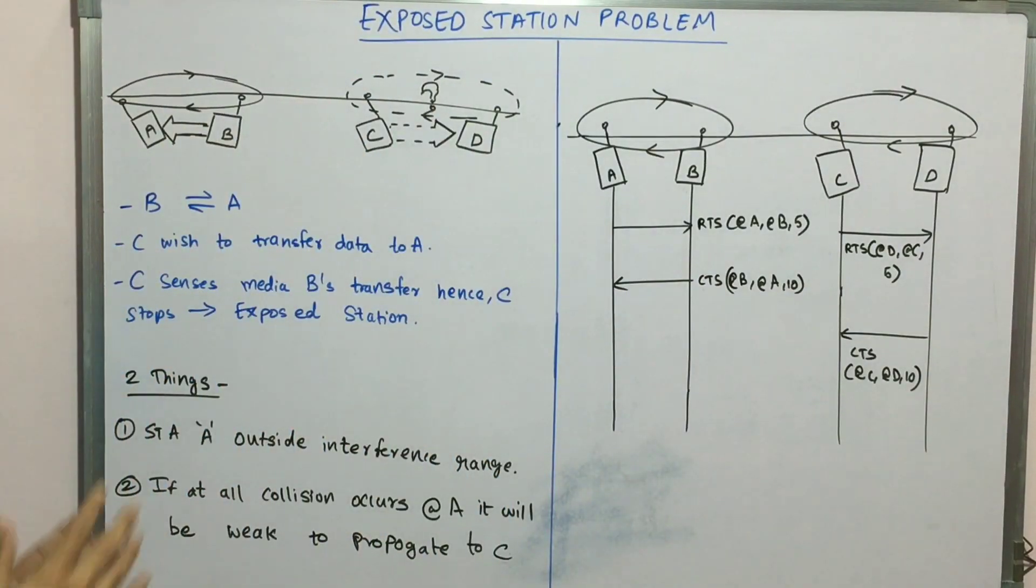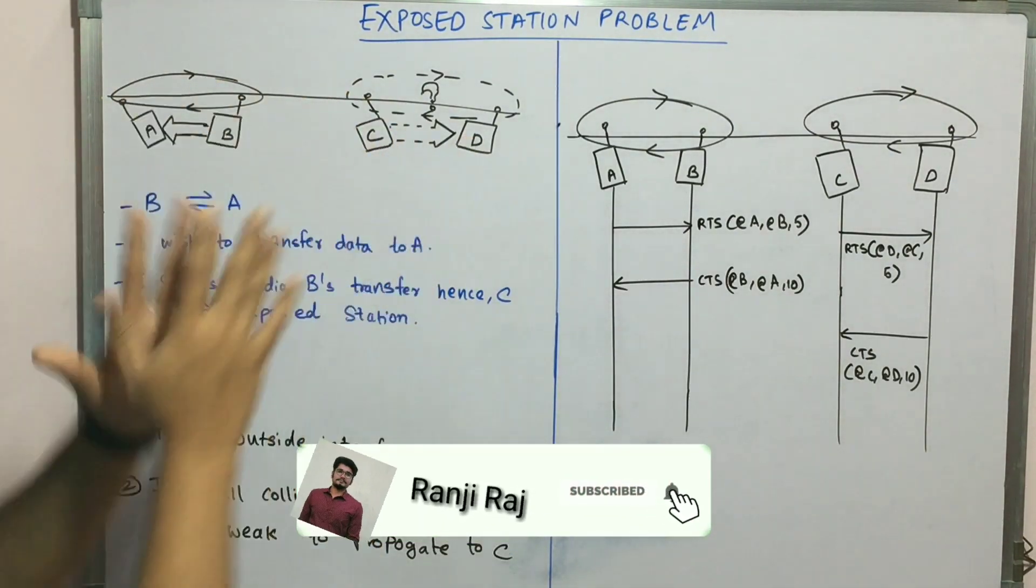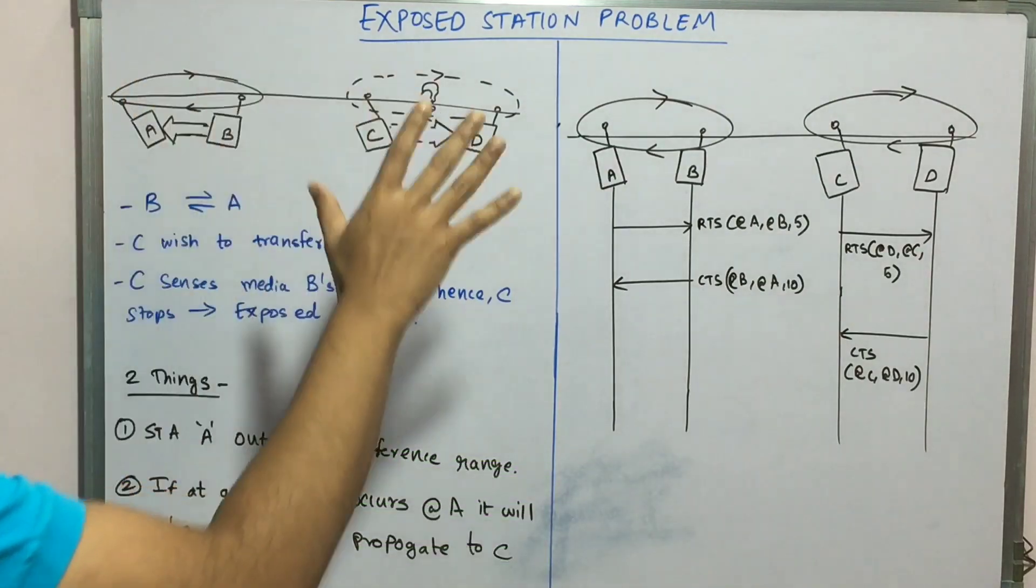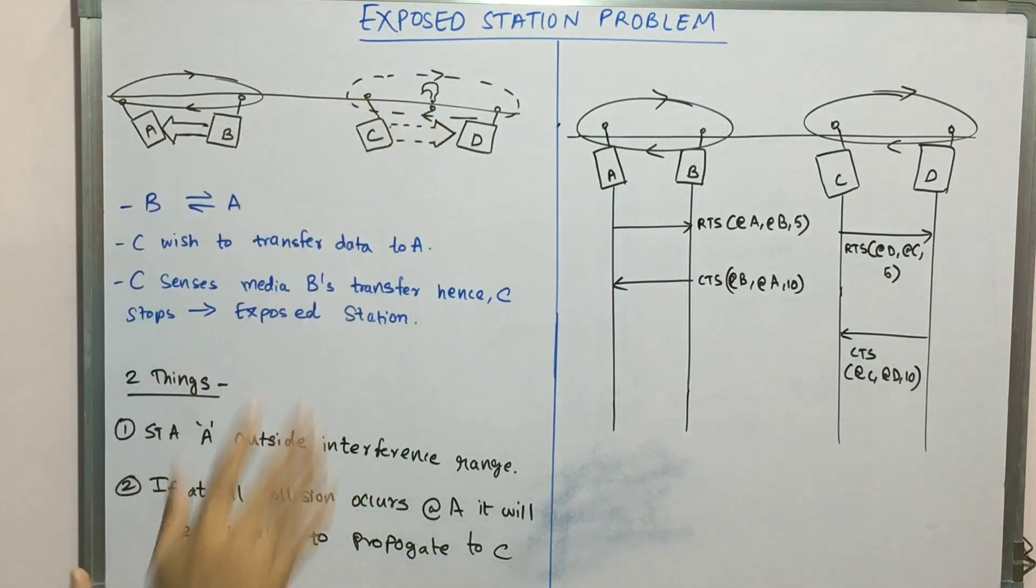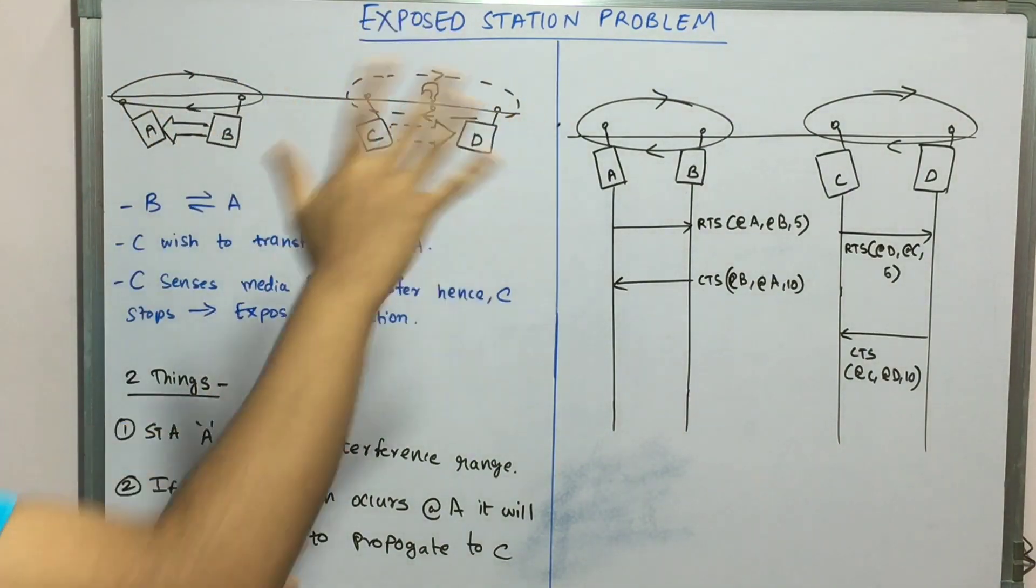To begin with, we consider a similar example to the hidden station problem. Instead of three stations, we have four stations: A, B, C, D. Consider A is a guy, B is a girl, C is a guy, and D is a girl.